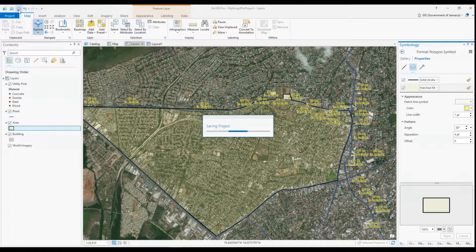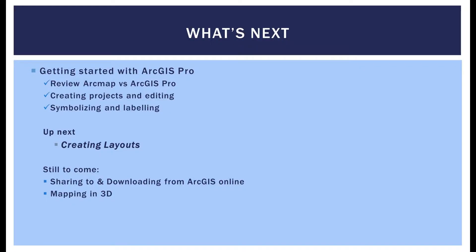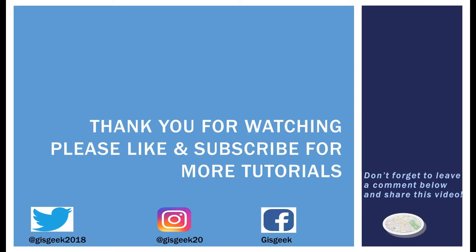So today we symbolized with the hatched fill and created labels with VBScript for our utility features. In the next ArcGIS Pro tutorial, you'll create layouts — and I think personally that this is the best part of Pro, at least for me. Thanks so much for watching and please don't forget to like, subscribe, and share this tutorial with a friend or colleague who you believe would benefit from this. Leave a comment below to let me know how you like the tutorials or if there are other tutorials you'd like to see. Thanks again and see you next time.